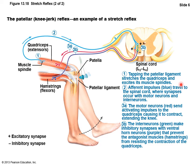Tapping the patellar ligament stretches the quadricep and excites its muscle spindles. Afferent impulses travel to the spinal cord where synapses occur with motor neurons and interneurons. The motor neurons send activating impulses to the quadriceps causing it to contract, extending the knee. The interneurons simultaneously inhibit the ventral horn neurons that would activate the antagonistic hamstring muscles, preventing them from resisting the quadriceps contraction — so you're contracting the quads and inhibiting the hamstrings.